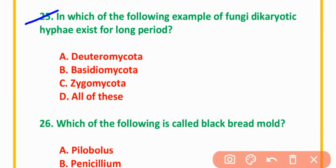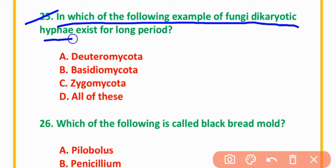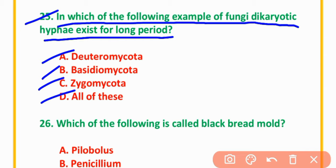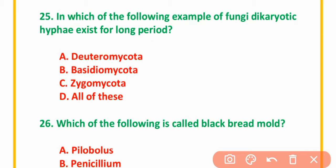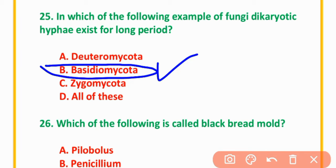MCQ Number 25: In which of the following fungi does the dikaryotic phase exist for a long period? Options: Deuteromycota, Basidiomycota, Zygomycota, or Alafa. The correct option is option B: Basidiomycota.